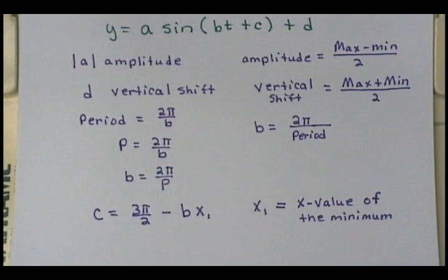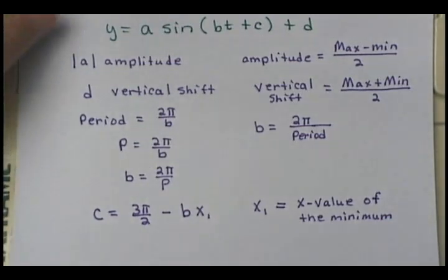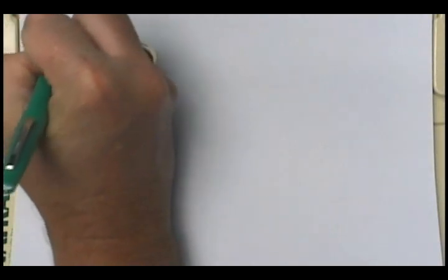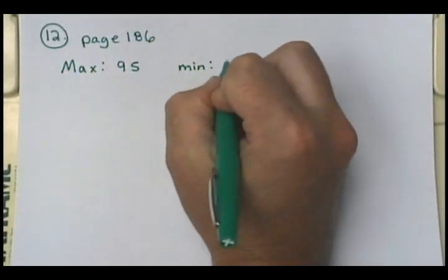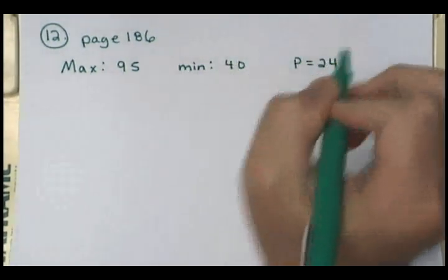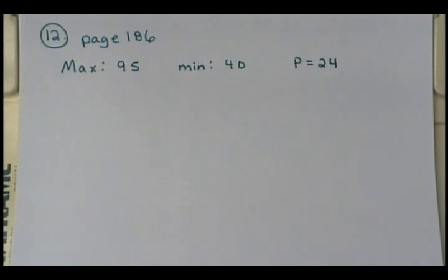Turning to page 186, let's look at problem number 12. What you're given here is a max of 95, a min of 40, and a period of 24. What they want you to do is come up with your sinusoidal equation.